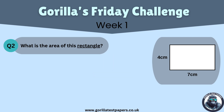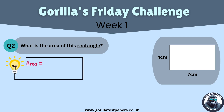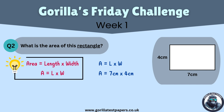Let's get started. We know the equation for area, which is area equals length multiplied by width. We then fill in our length and width using the dimensions shown on the diagram. So area equals 7cm multiplied by 4cm. Therefore, 7cm multiplied by 4cm is 28cm squared.